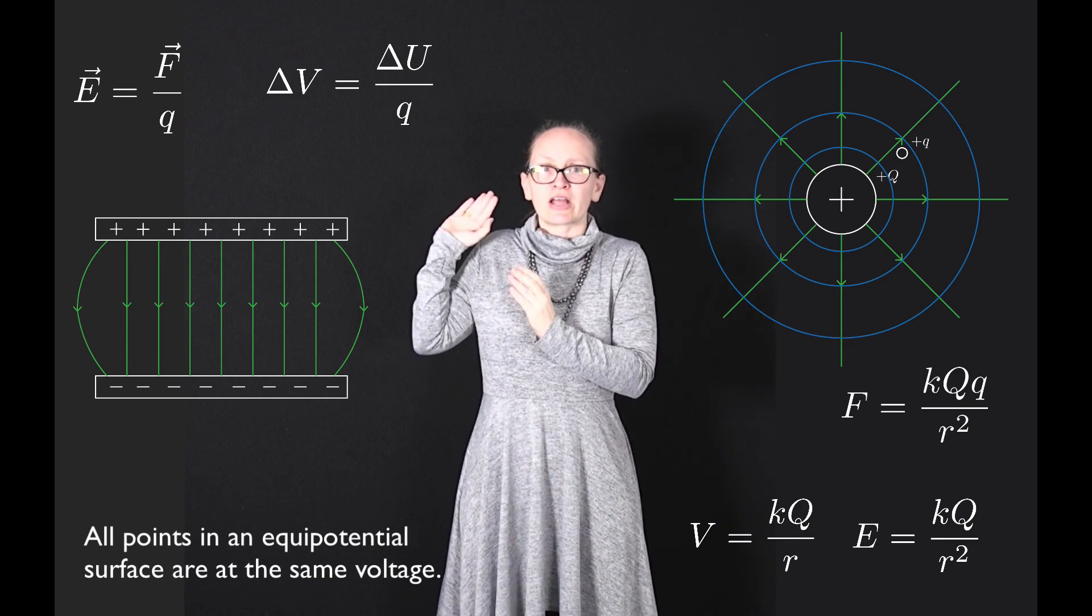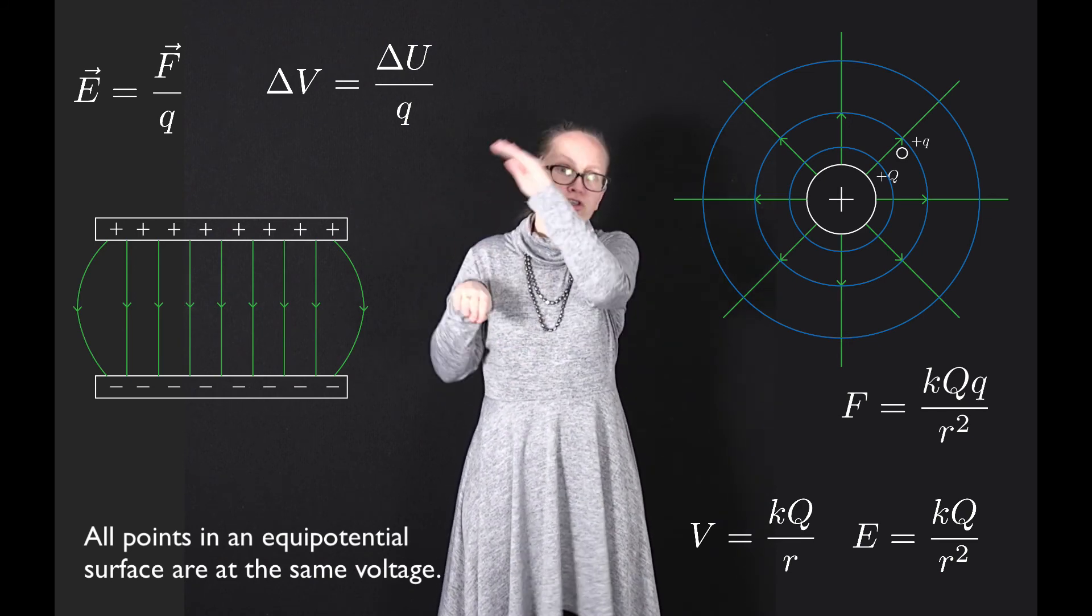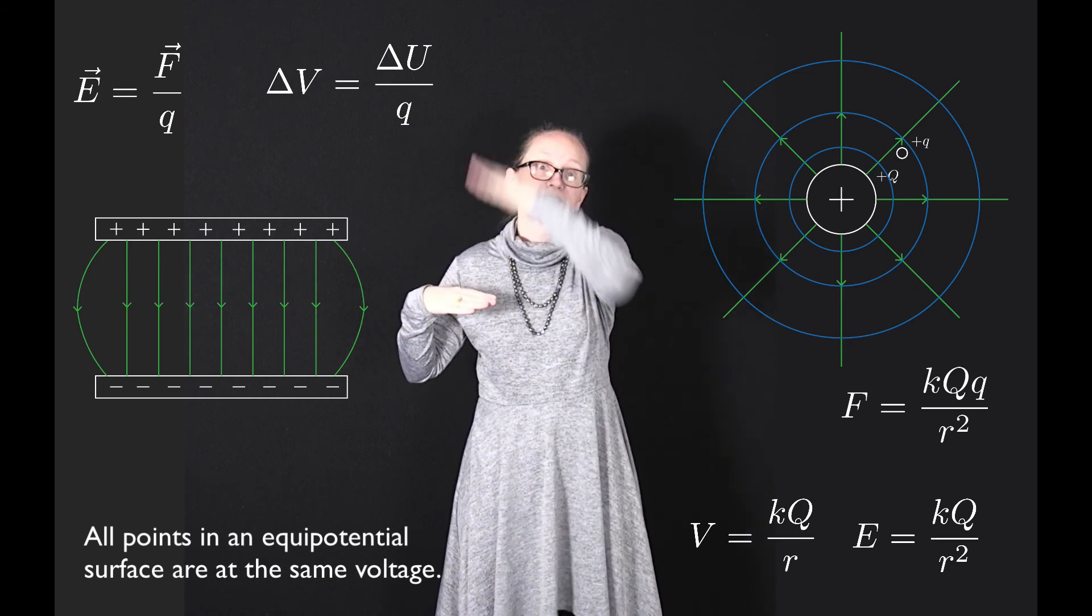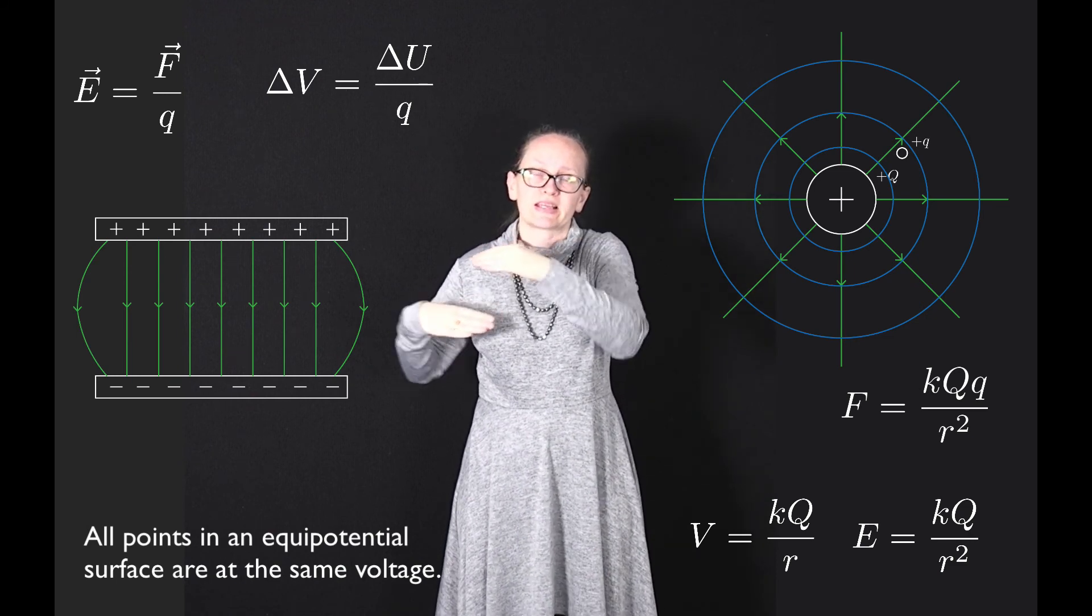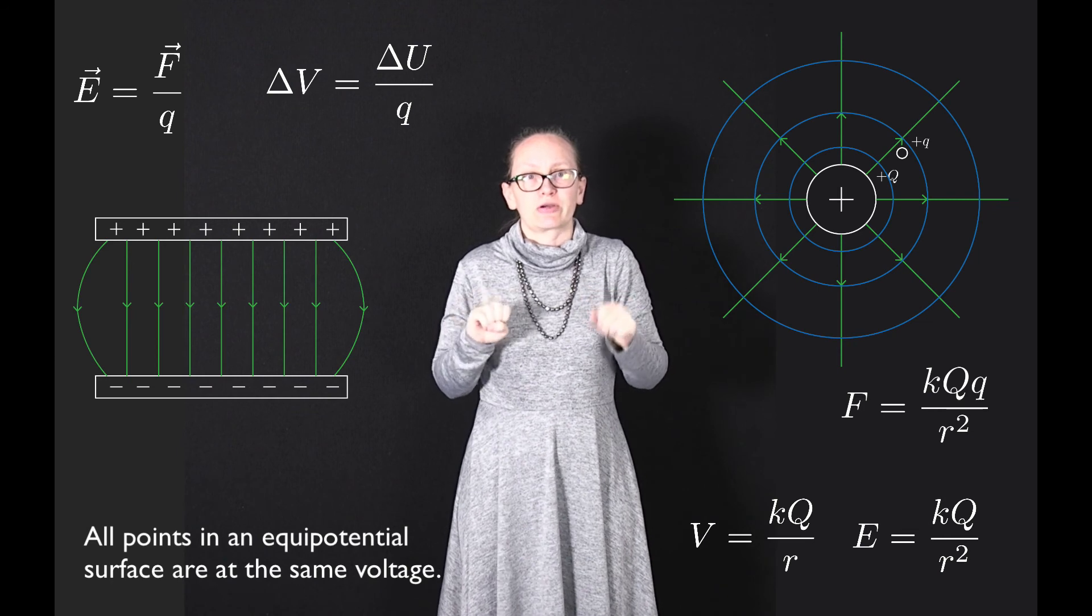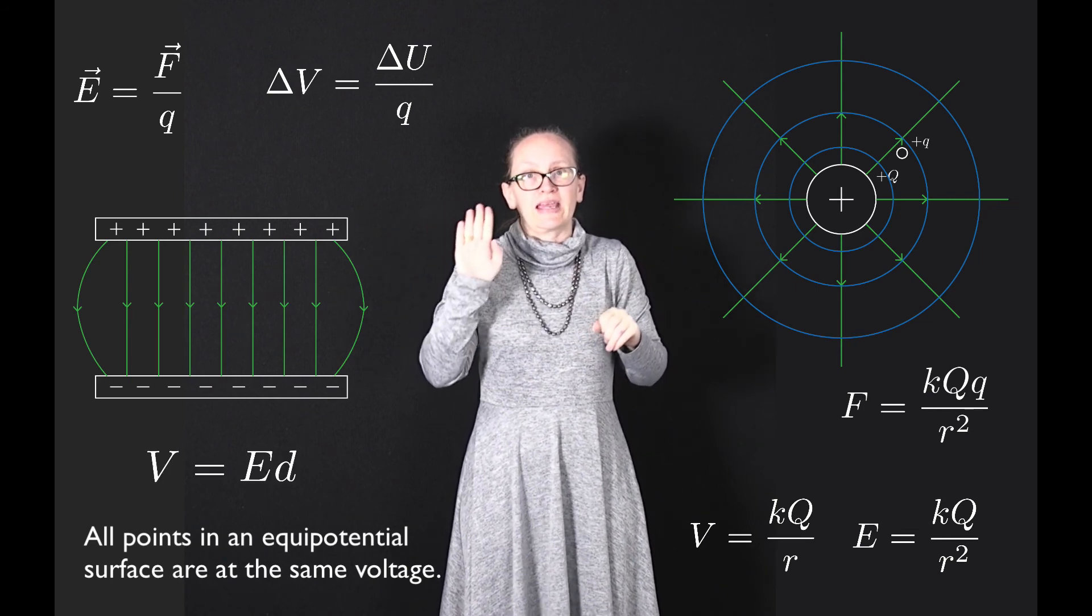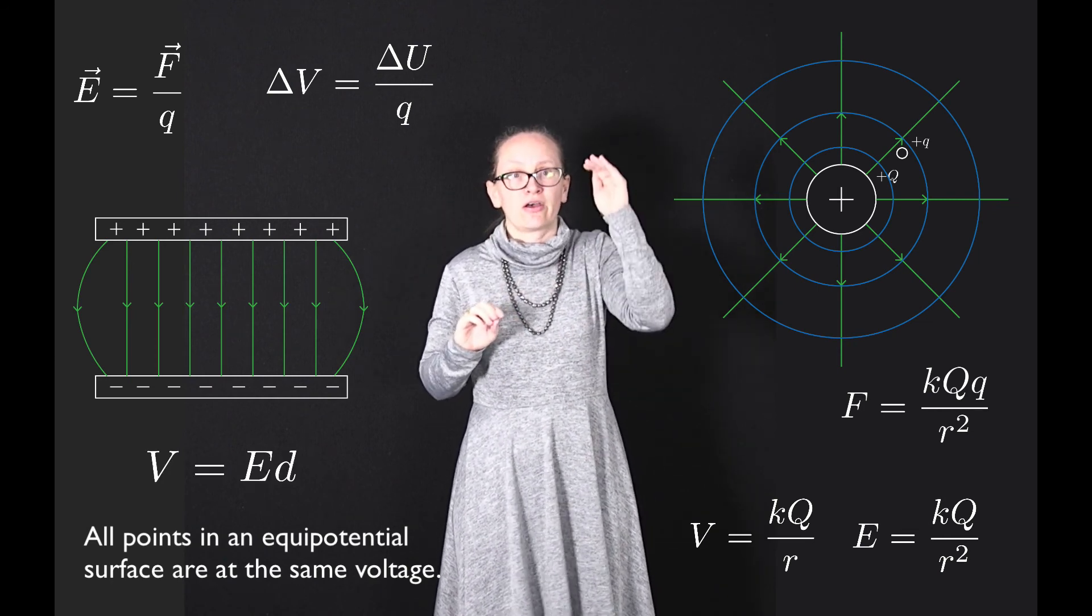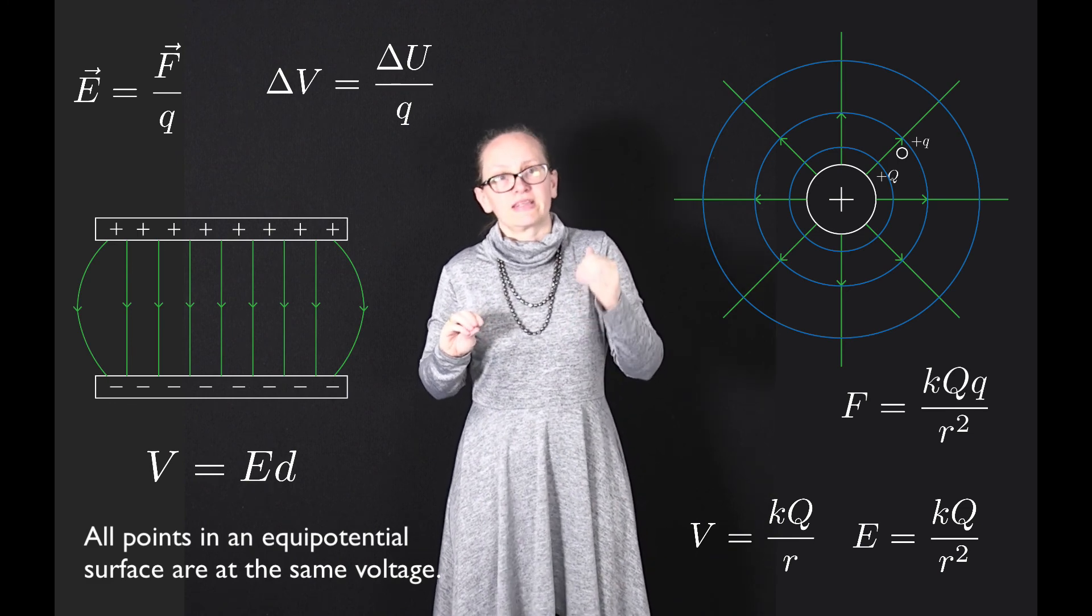If we imagine our other example with the two charged plates where we had a constant electric field between the plates, then the voltage in this case is described by the equation V equals Ed where d is the distance from the negative plate.